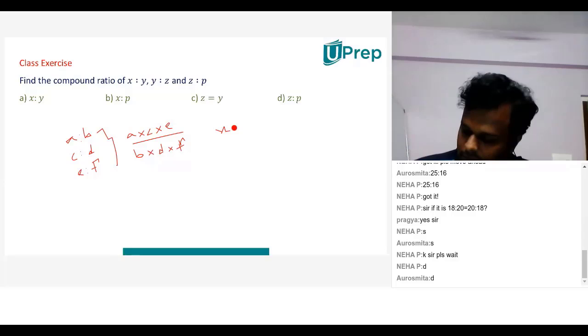So children here, I'll have what? X into. First is X here and then I have Y here and I have a Z here. So X into Y into Z divided by Y into Z into P.